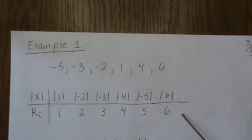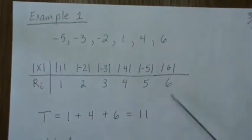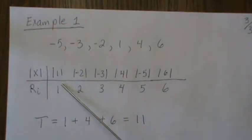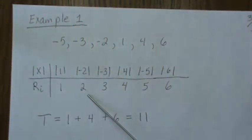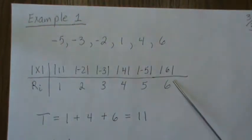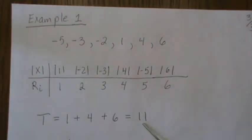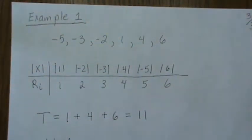We rank them one through six, and then our test statistic is the ranks associated with the positive. So there's a one, a four, and a six. Our test statistic is 11. That's how you calculate the signed rank test.